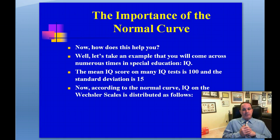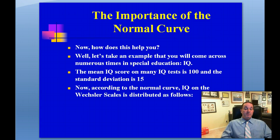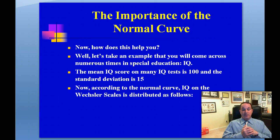Let's talk about now the importance of the normal curve — how does the normal curve help you? Let's take an example that you'll come across numerous times in special education, and that's IQ. As you may be aware, the mean IQ score on many IQ tests is 100, and average IQ is 100 when the standard deviation is 15. The most commonly used IQ test today is the Wechsler test, better known as the Wechsler Intelligence Scale for Children, known as the WISC.